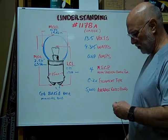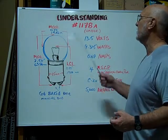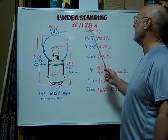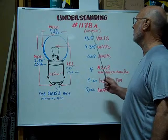Hi, here at Bulbtown. We want to help you understand and identify the number 1178A Amber Miniature Bulb.